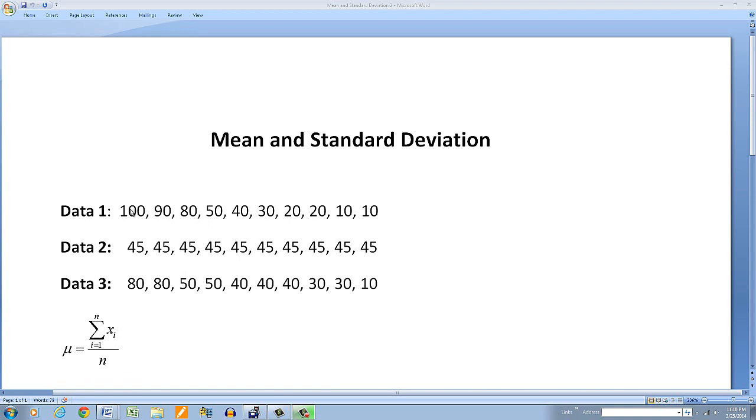Well, if you add these up and divide by 10, because that's how many scores you have, you get 450 divided by 10, which is 45. So the average for the first set of data is 45.